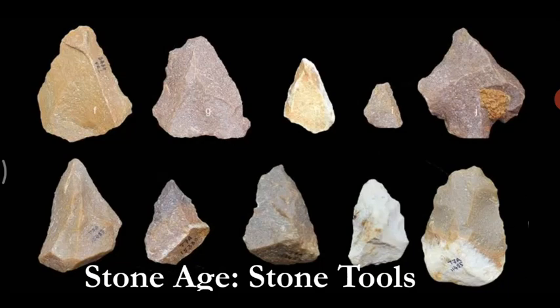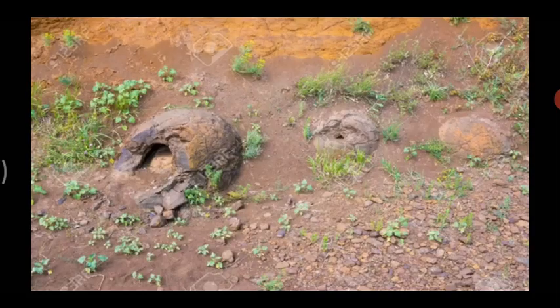In our second term we will learn more about man — how man slowly and gradually adapted to his environment, started settling in one place, and how we began with cultivation, harvesting, and domesticating animals. Today we begin with Lesson 6: Stone Age and Stone Tools. In this lesson we shall learn about the different periods of the stone age and the different types of stone tools found in that age.